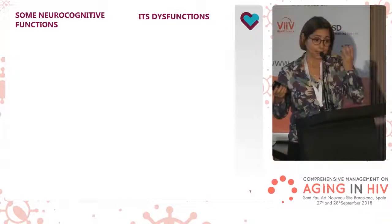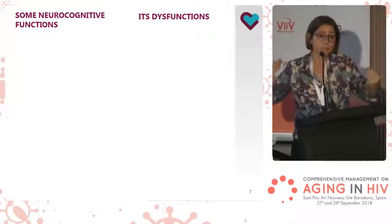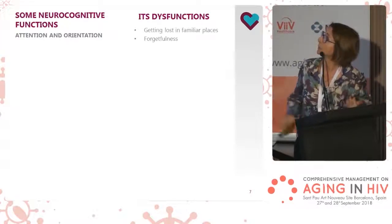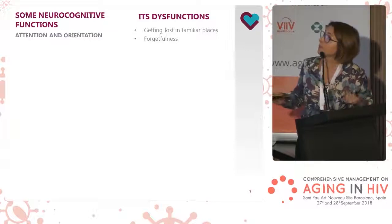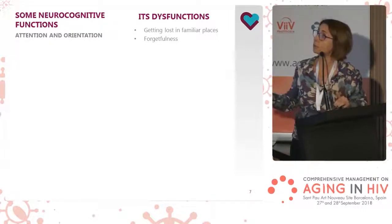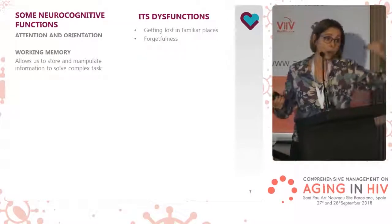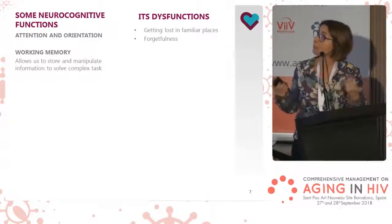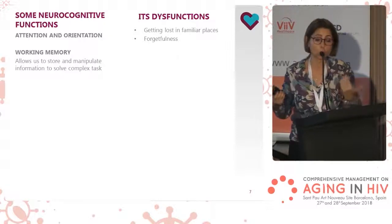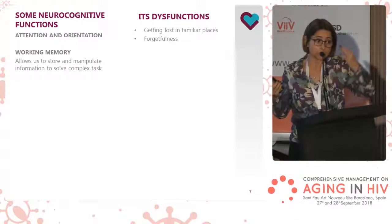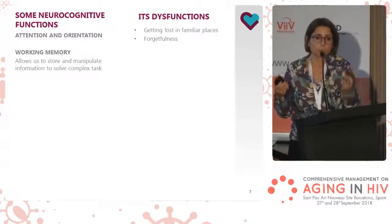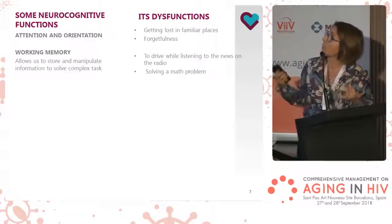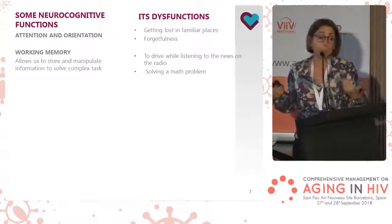Let's talk about examples of neurocognitive functions and their dysfunctions. Attention and orientation is the first one we explore — getting lost in familiar places, or increased forgetfulness. Working memory is a complex capacity that allows us to store and manipulate information to solve complex problems — for example, doing three things at the same time, such as driving while listening to the news on the radio.